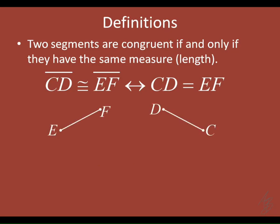When talking about congruent segments, we'll have two segments that look alike — they might be going in different directions and be in different places, but they have the same length. To mark segments as congruent, we use little tick marks. Those tick marks tell us that these two segments are congruent to each other. So if I tell you segment EF is 50 centimeters, then segment CD is also 50 centimeters.